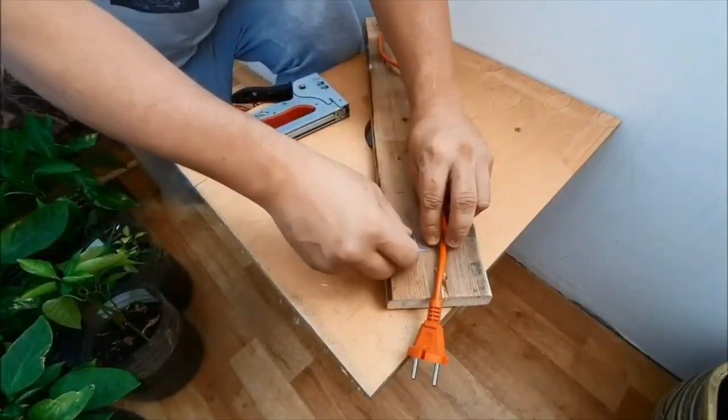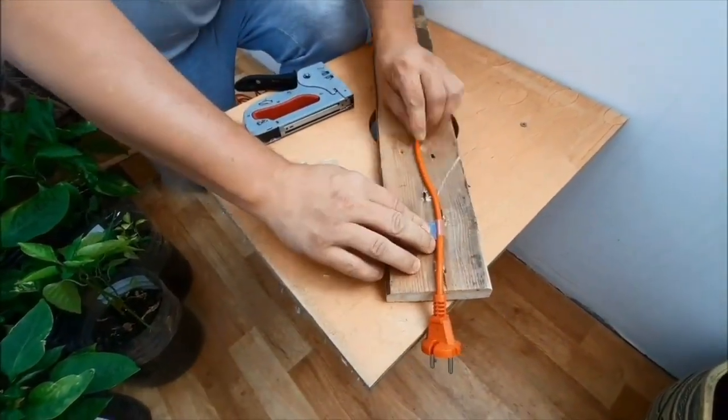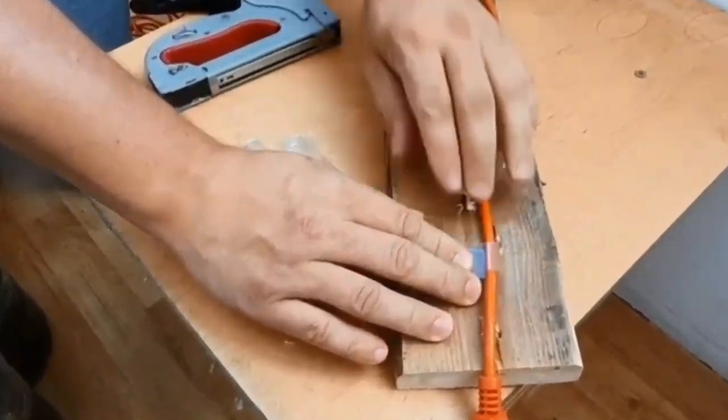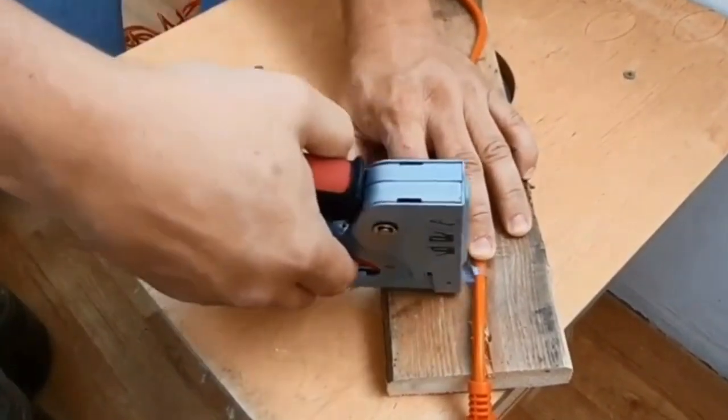As you understood, this is an example of how to prepare the wire on a surface. Look, this is the first one.